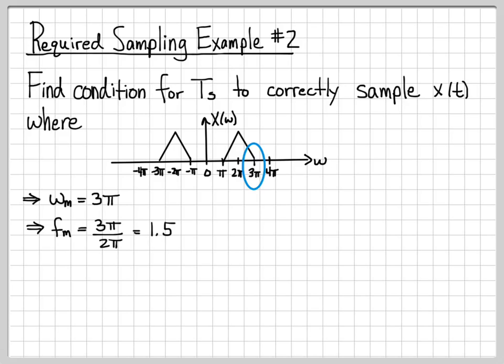The largest frequency is 1.5 hertz. So that means by the sampling theorem, we need to sample at a rate of 2 times fm, which is 2 times 1.5 or 3. So we require fs being greater than or equal to 3. And then as before, I can invert this inequality. 1 over fs needs to be less than or equal to 1 third. But 1 over fs is just T sub s. So this tells us that our sampling period needs to be less than or equal to 1 third.